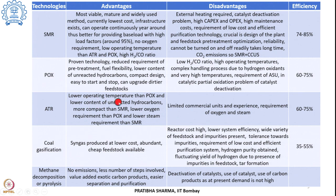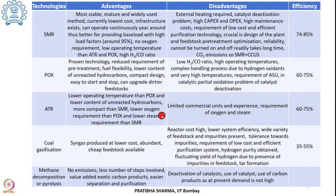The next method is autothermal reforming, which operates at relatively lower temperatures than partial oxidation and has a lower content of unreacted hydrocarbons in the product gas stream. It is comparatively more compact than steam methane reforming, has lower oxygen requirement than partial oxidation, and lower steam requirement than steam methane reforming. However, this method has limited commercial units and limited experience for hydrogen production, and there is a requirement of both oxygen and steam in the process. Efficiency lies in the range of 60 to 75 percent.